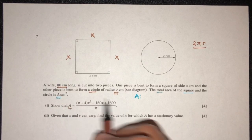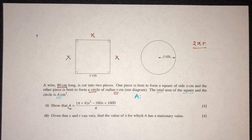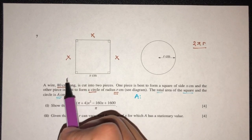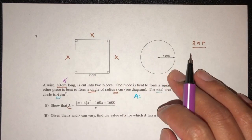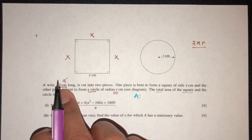So we have to show A is equal to this. Okay, so before we proceed to show A is equal to this, we have to first use that information. The total length of this one and this one will be 80. So let's find that out.